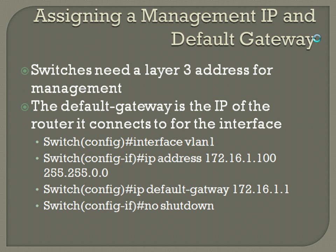From global configuration mode — just like a router, get into enable mode then config terminal — enter 'interface VLAN 1', then 'ip address 172.16.1.100 255.255.0.0'. Jump back to global configuration mode and enter 'ip default-gateway 172.16.1.1', then 'no shutdown'. That assigns the management IP and the default gateway.